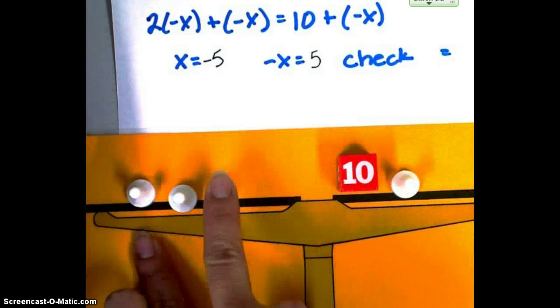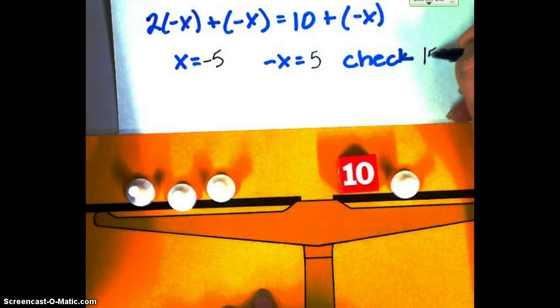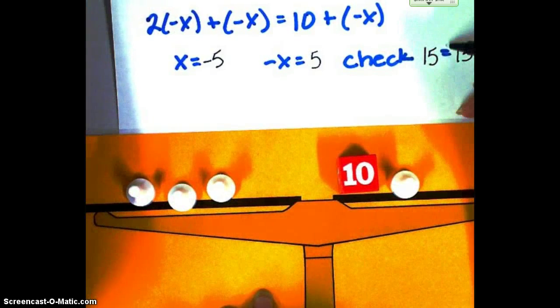So if each of these is 5, 5, 10, 15 on this side, and 10 plus 5 is 15 on that side. 15 equals 15. And we can check that one off.